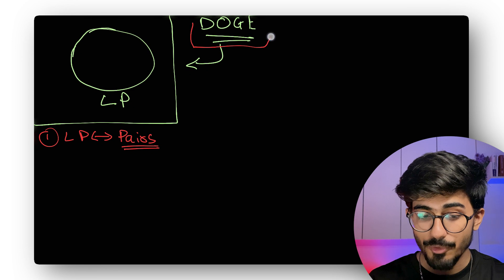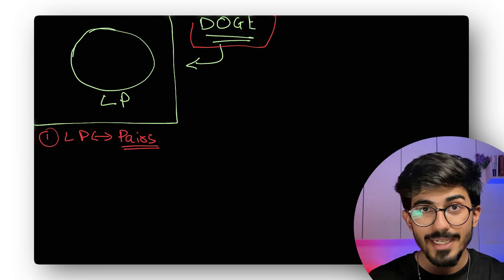I just have one cryptocurrency with me, which is Doge. Where do I get the other one from?